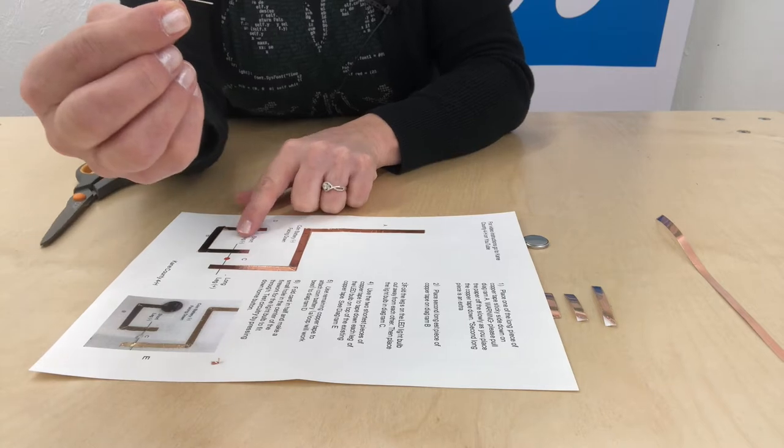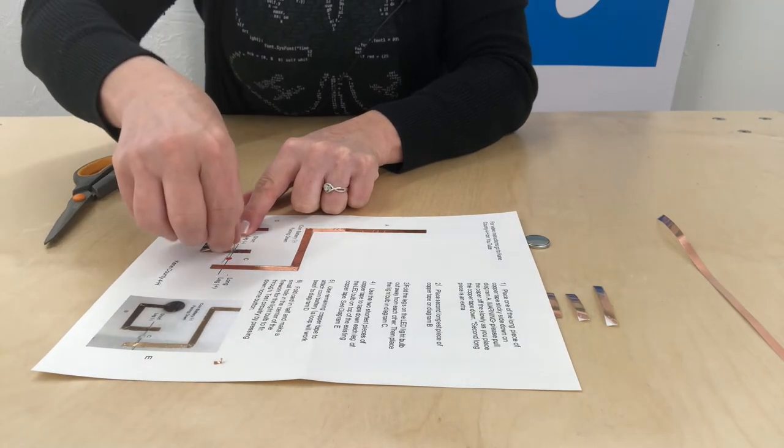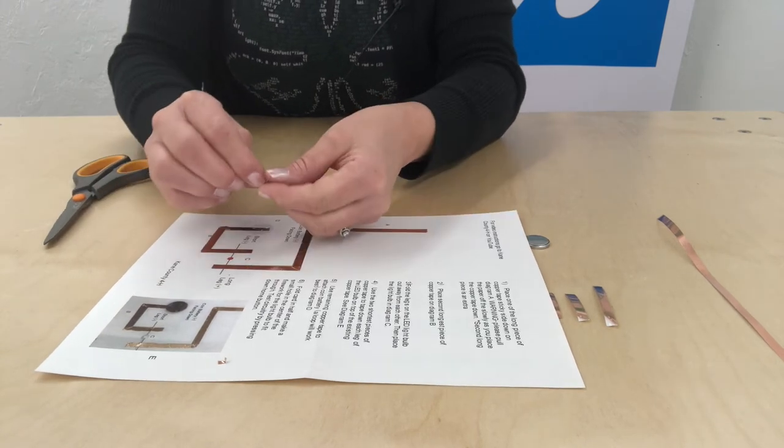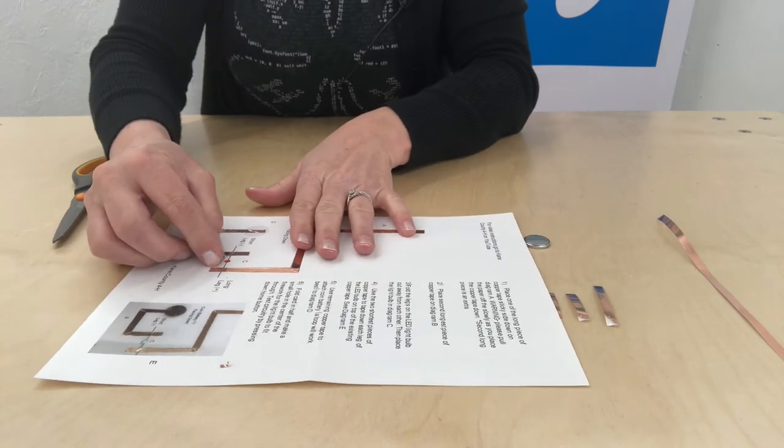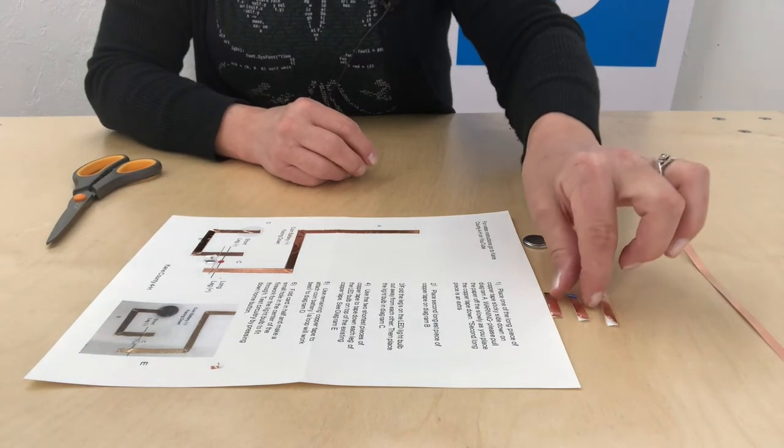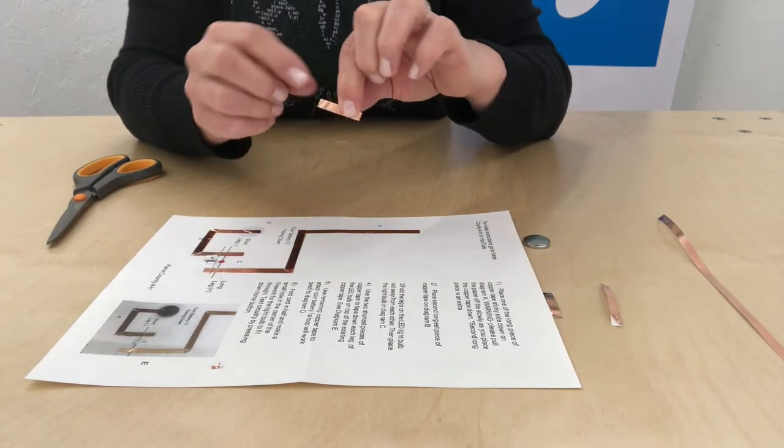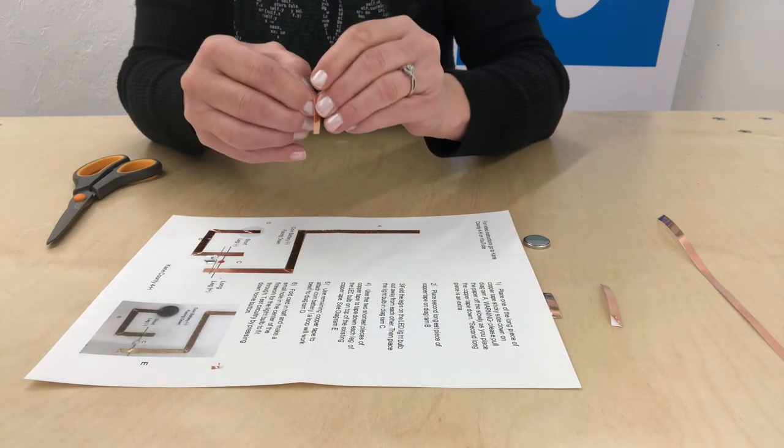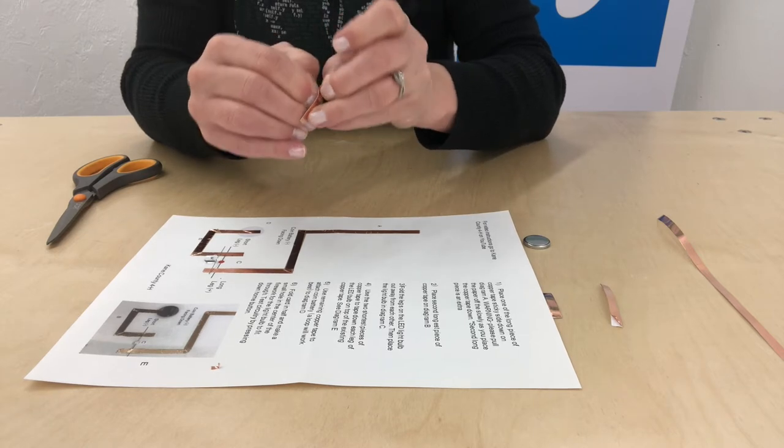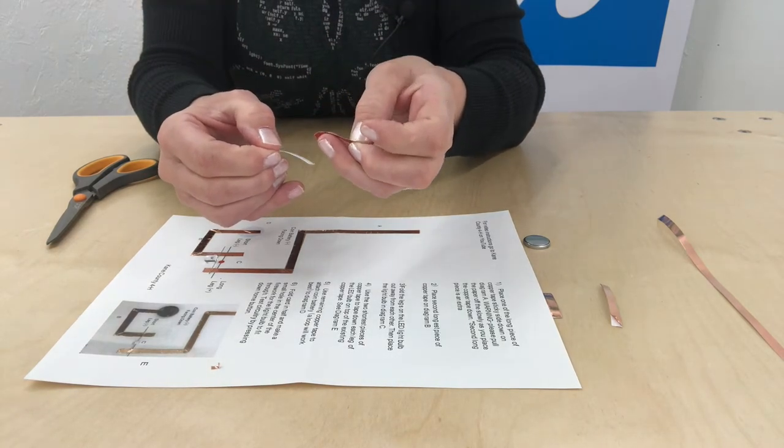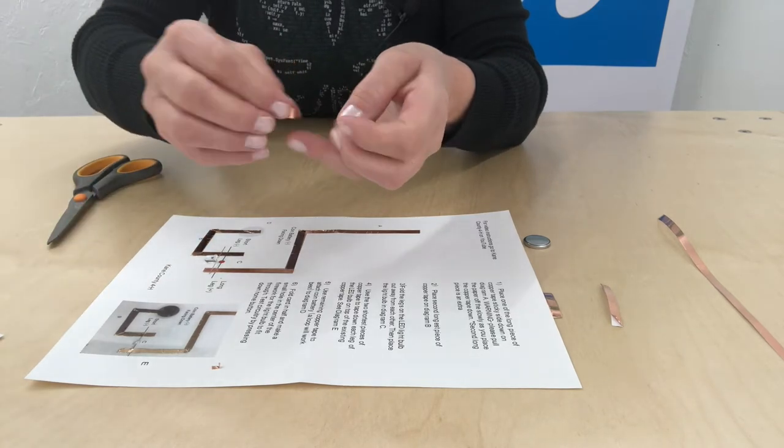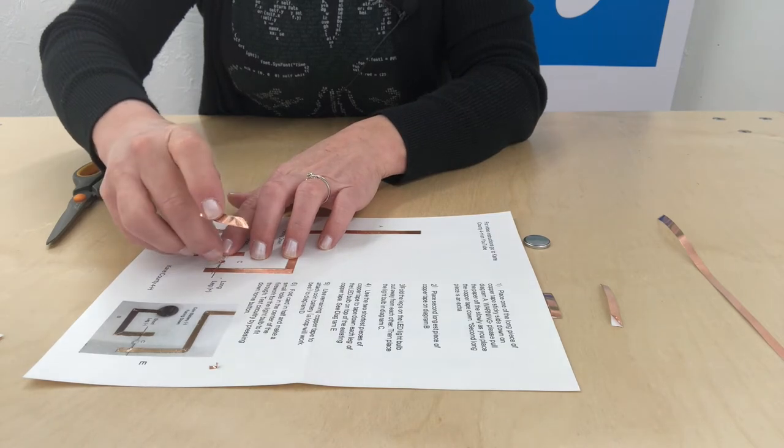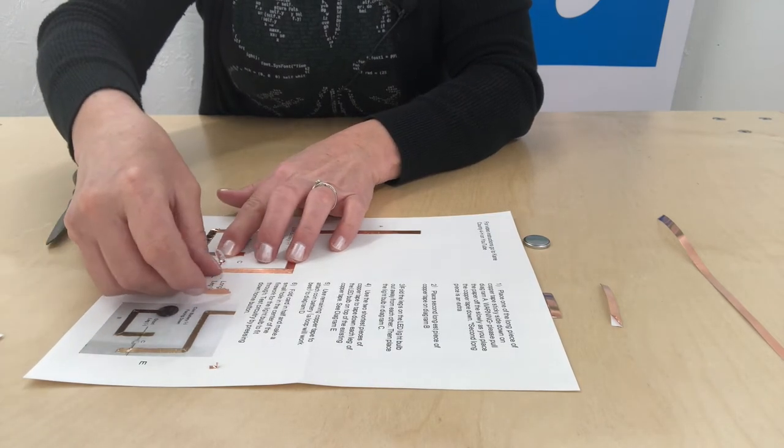Remember when you place it on your paper to follow the diagram, making sure that the short leg is on the left and the longer leg is on the right. Now that I have my LED ready, I'm going to lay it down there and take my two short pieces of copper tape. You're going to use these pieces to hold the LED legs in place. I'm going to pull off my first piece of copper tape. As you peel that off, make sure you keep that flat. Then I'm going to hold my LED in place, making sure that the bulb is right over the red circle.